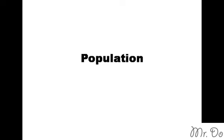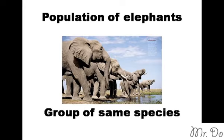A population is a group of the same species, like a group of elephants, a group of deer, or even a group of humans. Those are all populations.